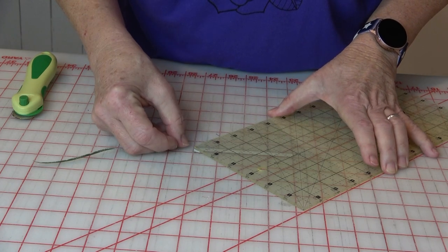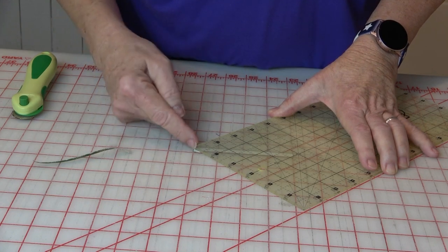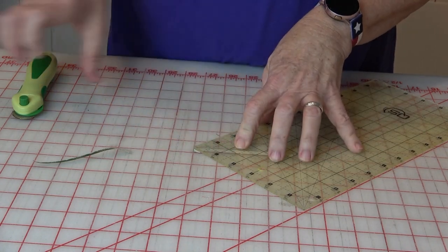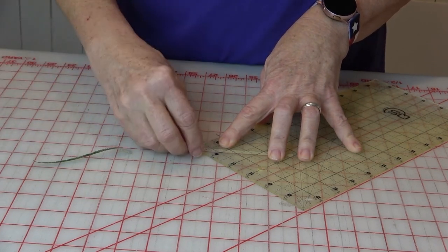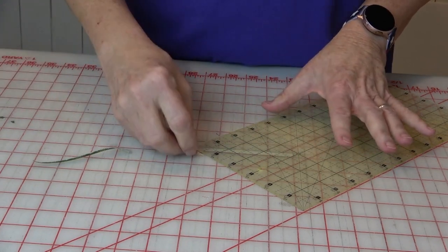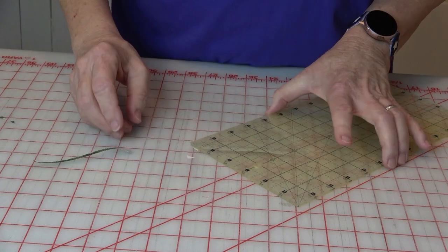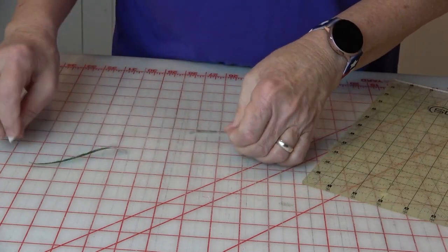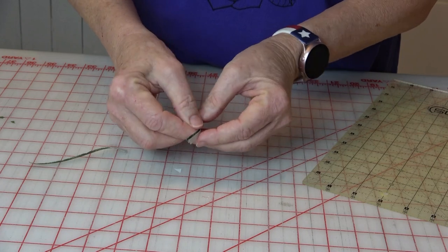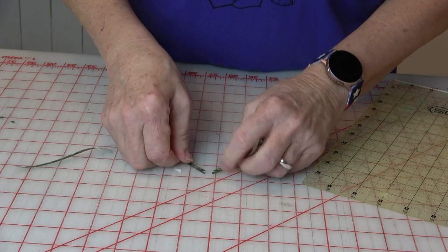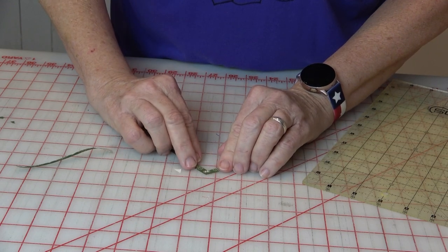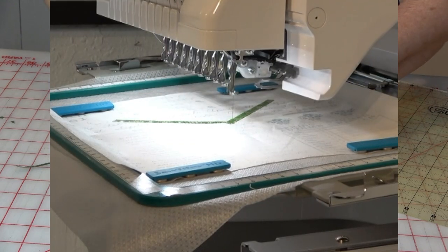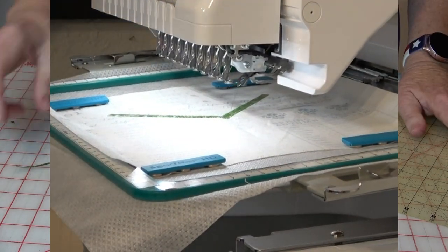...of the ruler on the point of the fabric, and then I'm just going to trim those off. Because they're one on top of the other, right sides facing, now I know for a fact that their points are going to exactly meet because they were cut at the same time. So that's what you're looking for to make that happen.